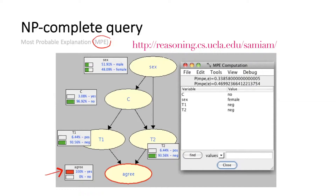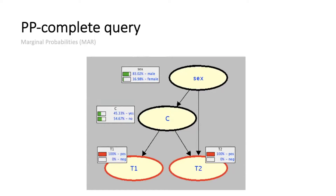The next query is MAR — marginal probabilities — which is also NP-complete. Here we're simply computing the marginals over the variables. In this case, given that the first test came out positive and the second test came out positive, what is the probability on the condition? What's the probability on being male or female? These are the marginal probabilities — your basic probability computation.